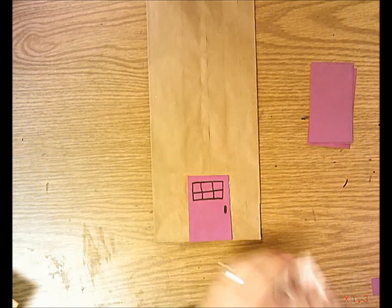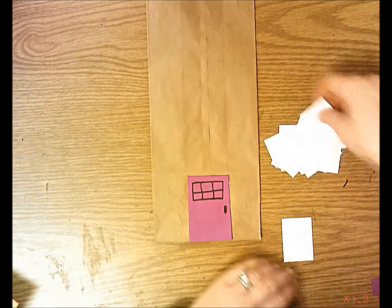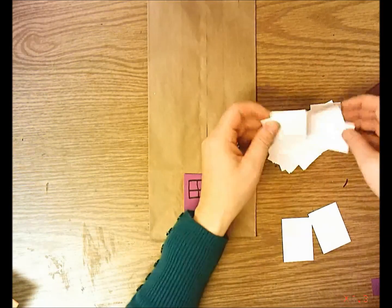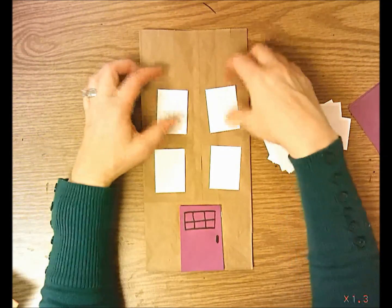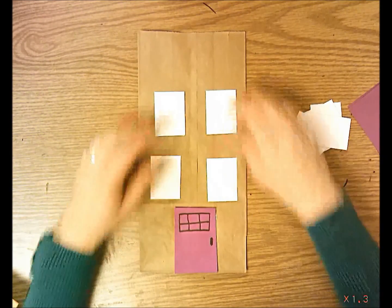I'm going to have some white scrap paper that's cut out for windows. You're probably going to need about four on the front. You don't want to do six because the roof takes up a lot of space, and you want these windows to stay close to the door.